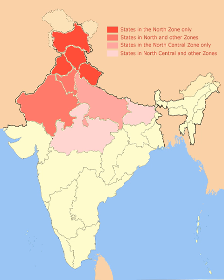Dance of North India has diverse folk and classical forms. Among the well-known folk dances are the Bhangra of the Punjab, Ghoomar of Rajasthan, and Ruf and Bhand Pather of Kashmir. Many dance forms with narrative and mythological elements have been accorded classical dance status by India's National Academy of Music, Dance and Drama, such as Kathak of Uttar Pradesh.